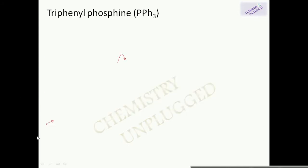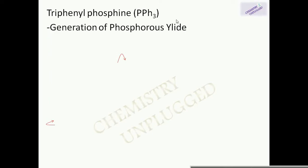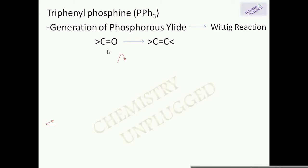First we will discuss about triphenylphosphine. Triphenylphosphine is used for the generation of phosphorous ylide, and the reaction related to it is the Wittig reaction. The Wittig reaction is the conversion of a C=O bond to a C=C bond. For this reaction we can use only aldehydes and ketones to convert them into alkenes.